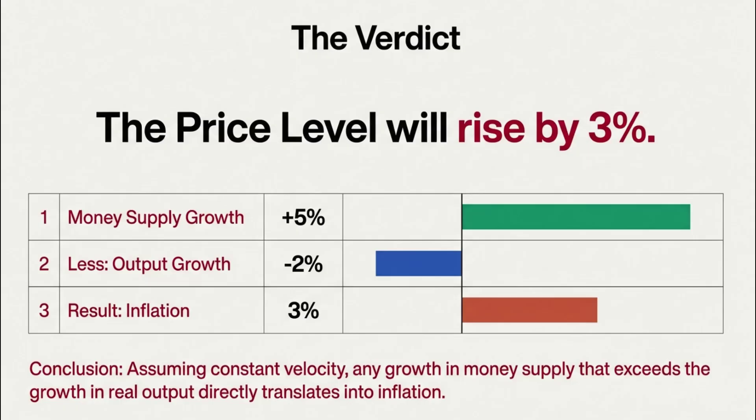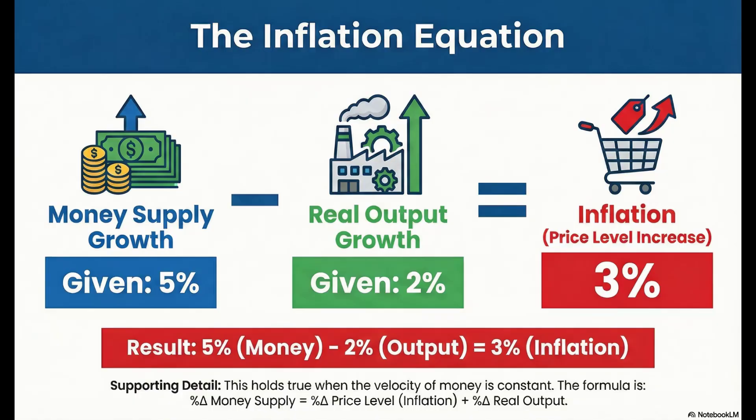So let's just recap the whole case, start to finish. The amount of money in the system grew way faster than our ability to actually produce more stuff. And because we assumed that money was being spent at the same constant speed, all that extra cash had to go somewhere. It ended up getting soaked up by prices, pushing them higher. The final verdict? 3% inflation.